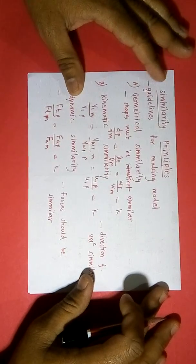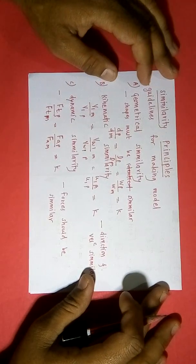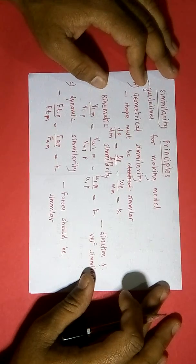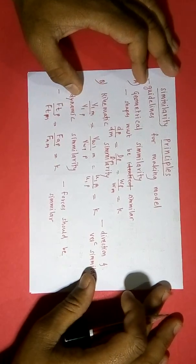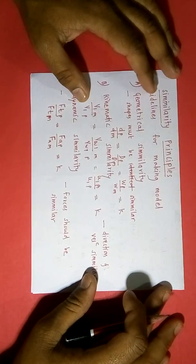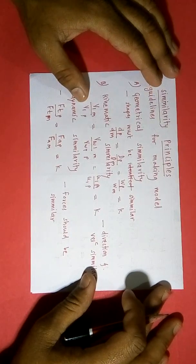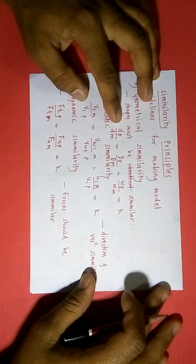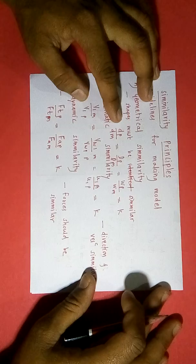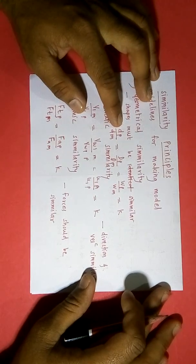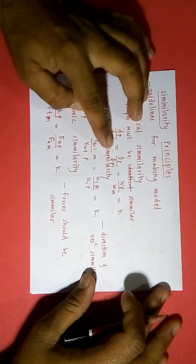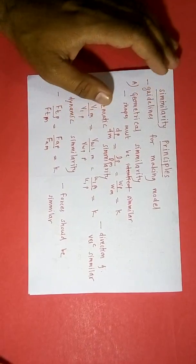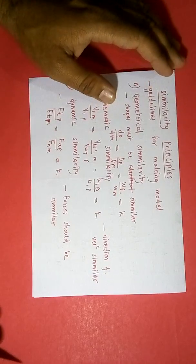There are three principles to follow while designing a model: geometric similarity, kinematic similarity, and dynamic similarity. Geometric similarity implies that the shape must be similar — that is, the dimensions of various parts for the model and prototype should have the same ratio. For example, the rotor diameter for prototype to model, or the width of prototype to model, this ratio should be constant.